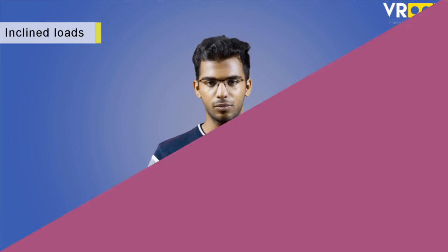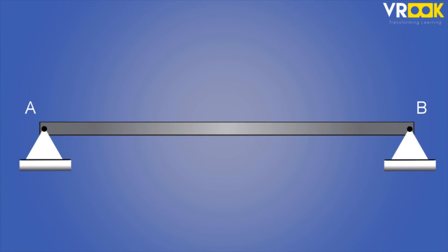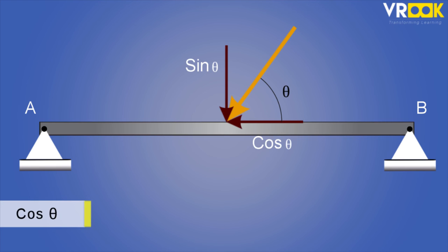Now let's look at the special case of loads: inclined loads. Inclined loads will act on the beam at a certain angle. We can solve this inclined load by converting it into two components, a vertical component and a horizontal component. We assign cos and sine values to these components. Cos theta is always on the side from which the angle is measured. The other side will be sine theta. In our case the horizontal component is cos theta and vertical component is sine theta.